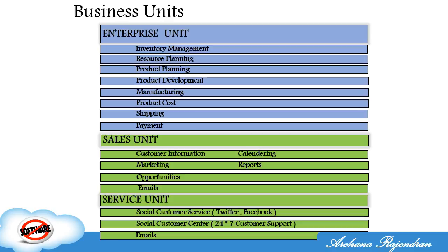The answer is: customer. The enterprise unit forms the back office — they are not customer-centric, they are enterprise-centric. Whereas the sales and service units are customer-centric; they form the front office. They interact with the customer — they know how many customers exist, their feedback, issues, concerns, expectations, and which territories they're in. All customer information is known only to the sales and service units, because they deal with the customer directly.